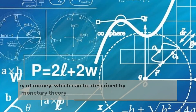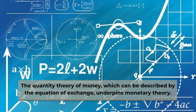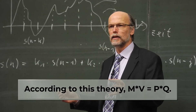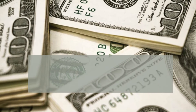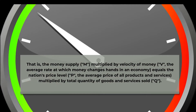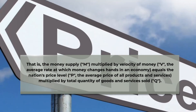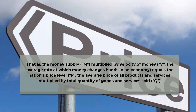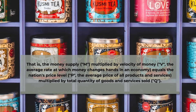The quantity theory of money, which can be described by the equation of exchange, underpins monetary theory. According to this theory, M times V equals P times Q. That is, the money supply (M), multiplied by the velocity of money (V) — the average rate at which money changes hands in an economy — equals the nation's price level (P), the average price of all products and services, multiplied by the total quantity of goods and services sold (Q).